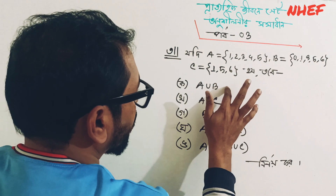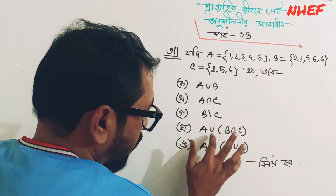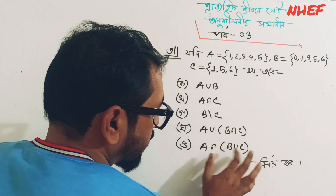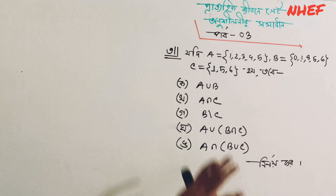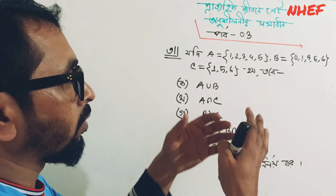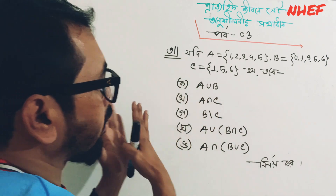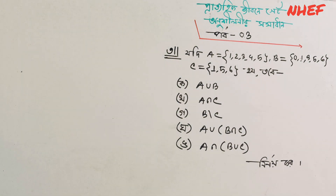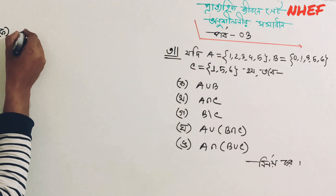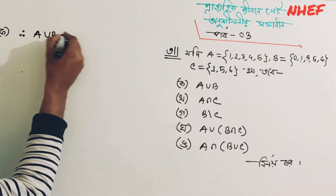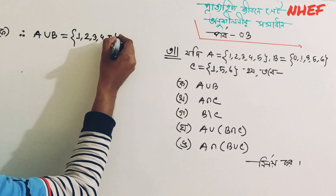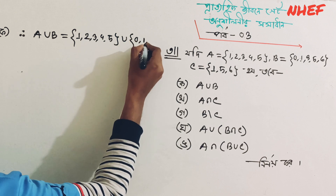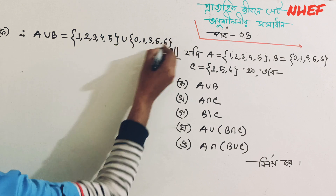A complement of B, B complement of A. We are going to solve this math, so we will solve the math. We have to solve this. B R means 0, 1, 3, 5, 6, right. It is B R.